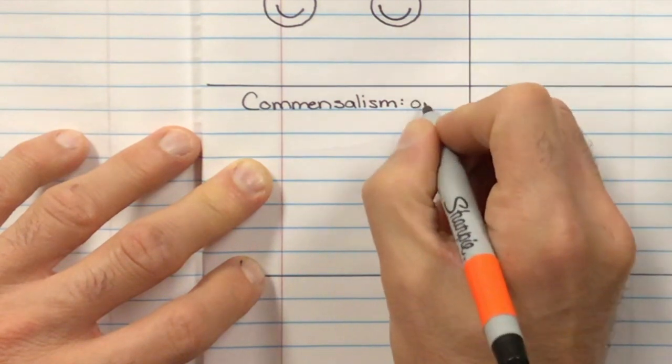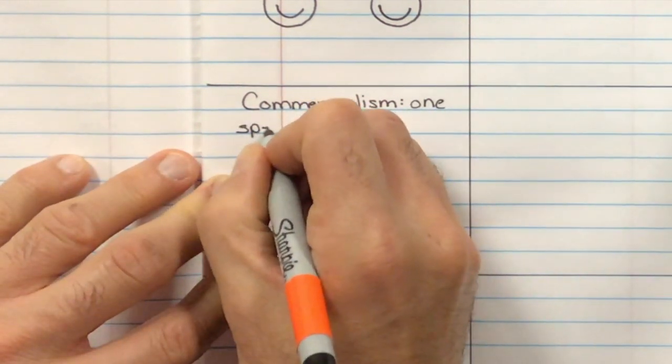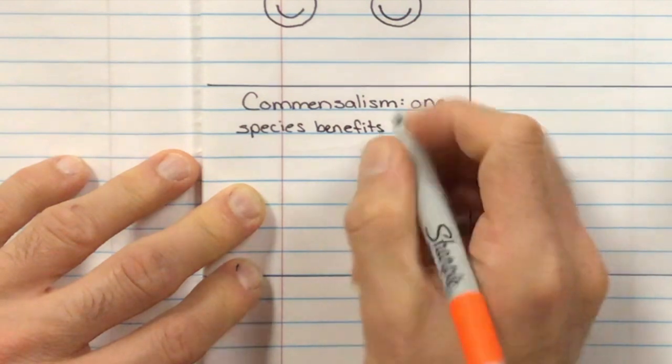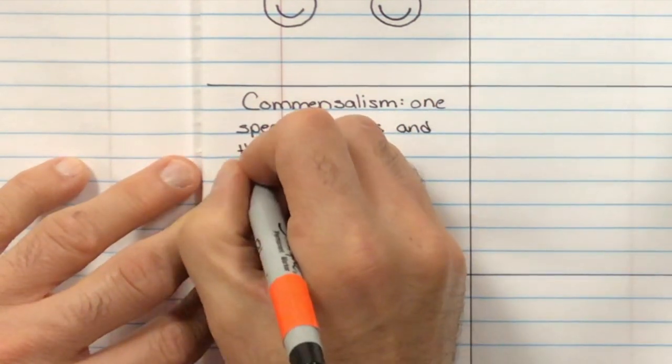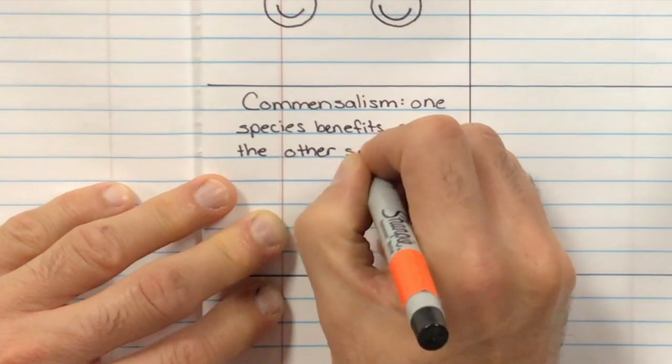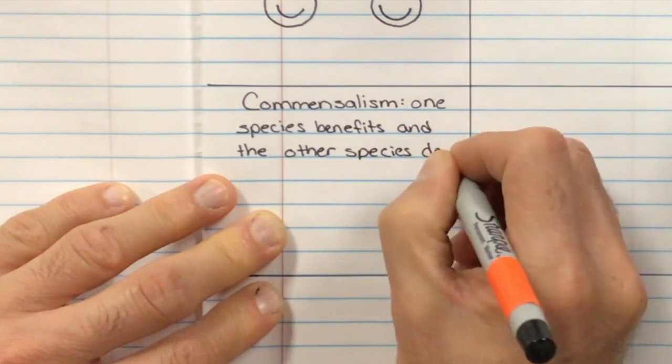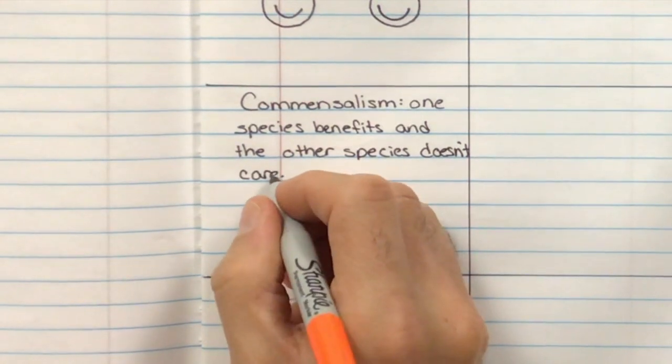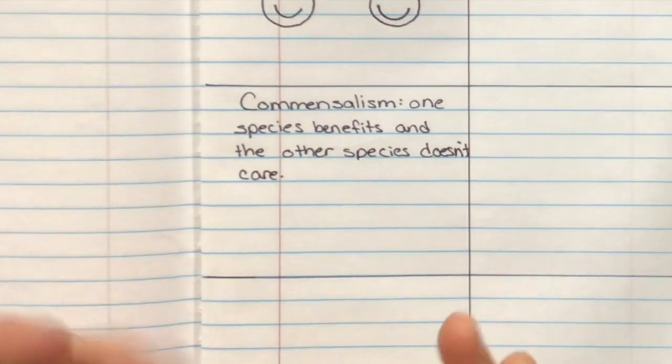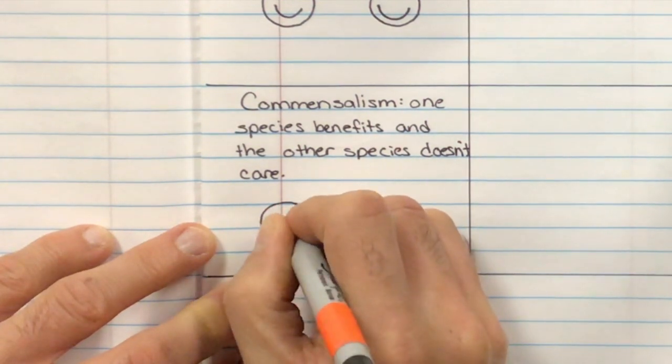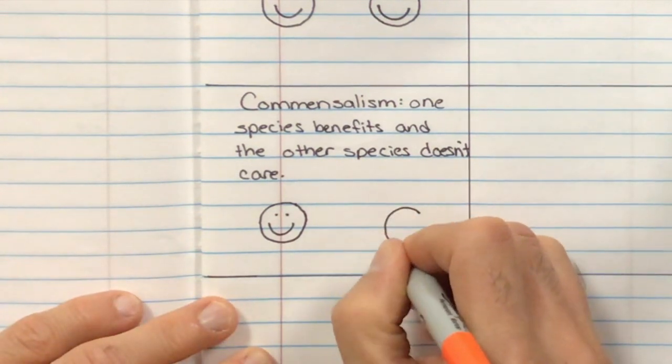In this case, one species benefits, and the other doesn't care. Okay. So in this case, you have two different species. One is kind of getting something from the other, but the other one, it doesn't bother them. It doesn't hurt or harm them in any way. So your smiley face, woohoo, benefit. And the other species, who just doesn't affect.